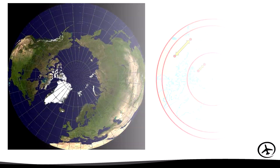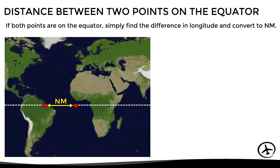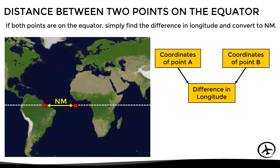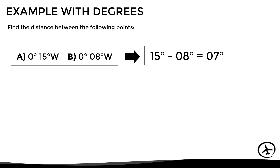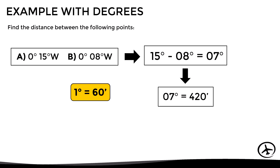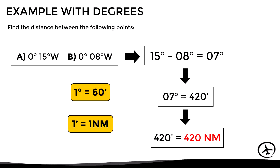If both points are on the equator, we just have to find the difference in longitude and convert it to nautical miles. For example, here the latitude of both points is 0 degrees, which means they are both on the equator. So to determine the difference in longitude we just subtract the longitudes, obtaining 7 degrees as a result. Since each degree equals 60 minutes, this means that the difference in longitude can be expressed as 420 minutes. And since at the equator each minute equals 1 nautical mile, the linear distance between these points is 420 nautical miles.